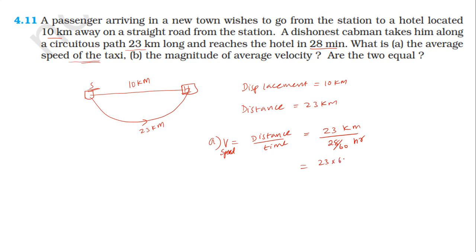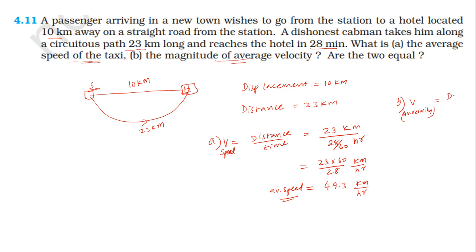Average speed equals total distance divided by time: 23 multiplied by 60 divided by 28, giving kilometers per hour. For the magnitude of average velocity, it is displacement divided by time taken: 10 multiplied by 60 divided by 28 km/h. The time is 28 minutes.